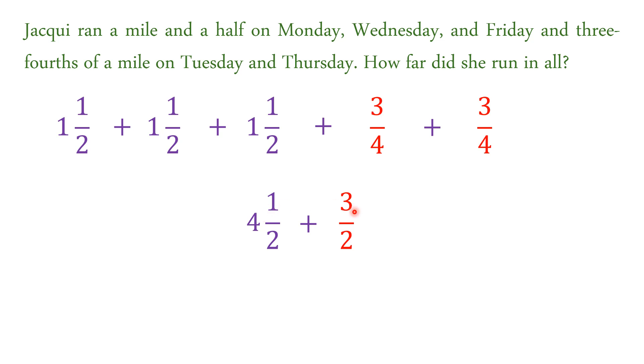Now, we can combine it, but since this is in mixed form, so we're going to change it to improper first. So to change it to improper, we multiply two times four, which is eight, and then add it here, plus one. So eight plus one is nine. And then copy the denominator.